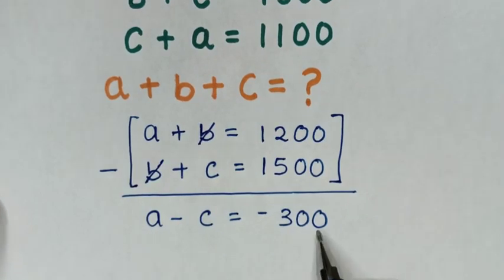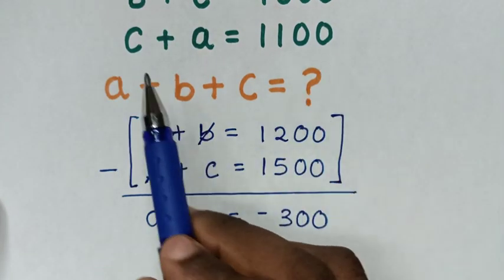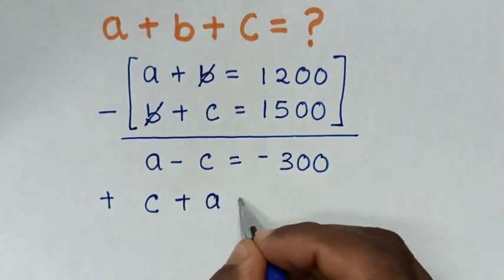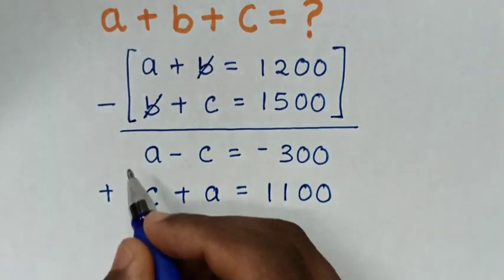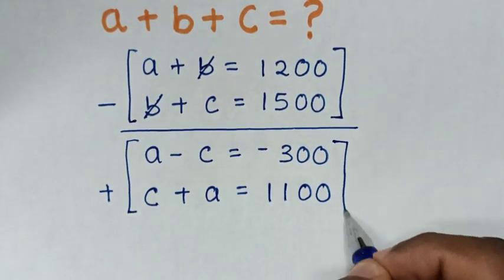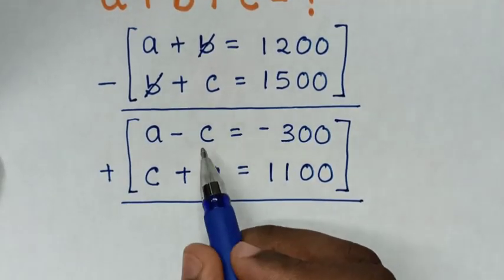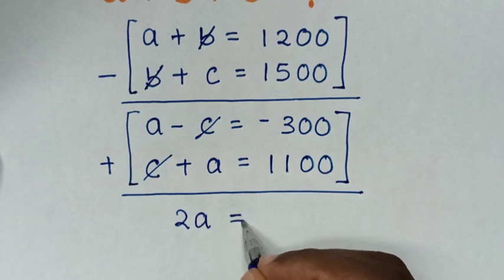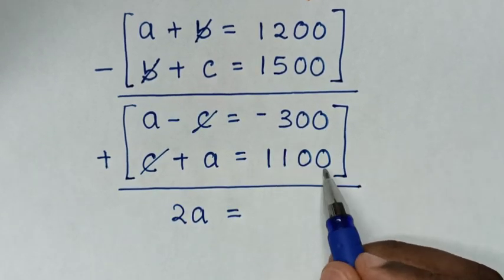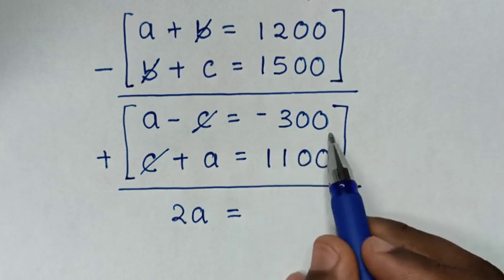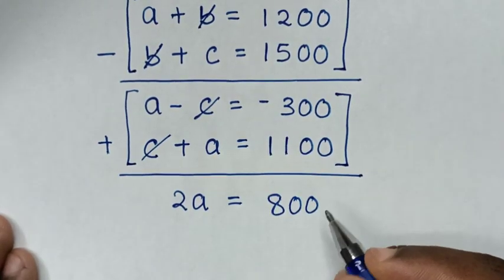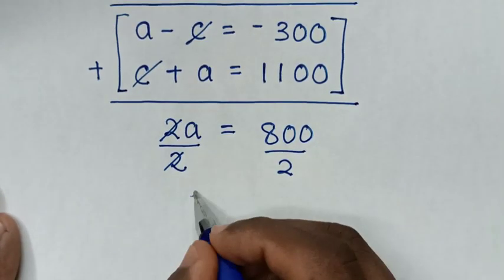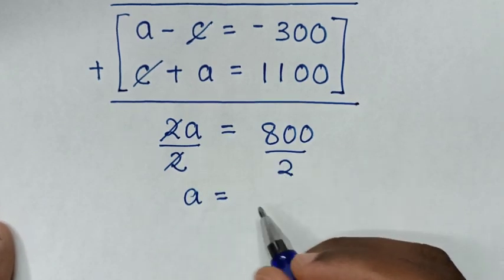In the next step, we add the third equation, C plus A equals 1100, to our result. Adding on both sides, negative C plus C cancels out. Then A plus A is 2A, equal to negative 300 plus 1100, which is 800. Dividing both sides by 2, A is equal to 800 divided by 2, which is 400.